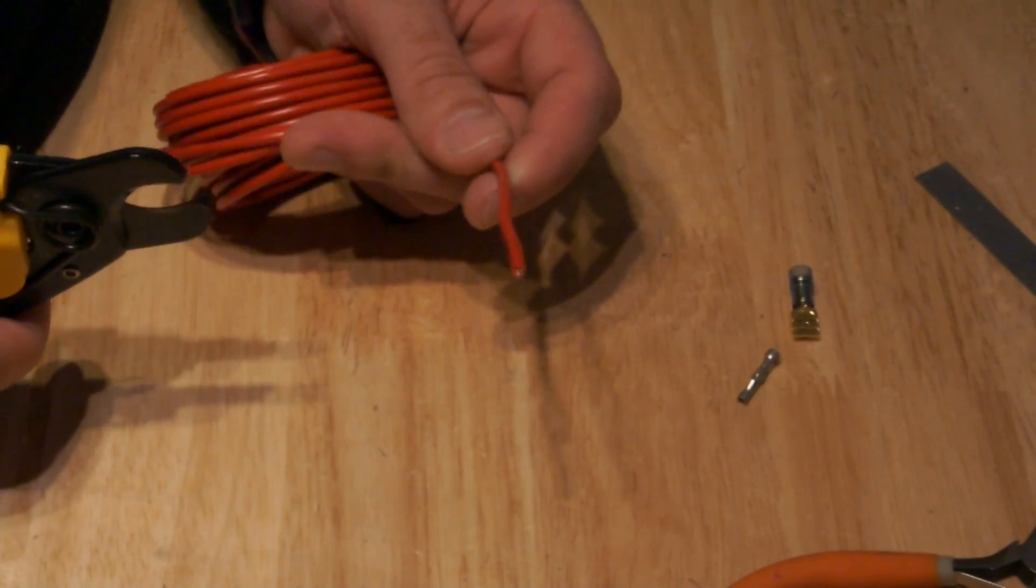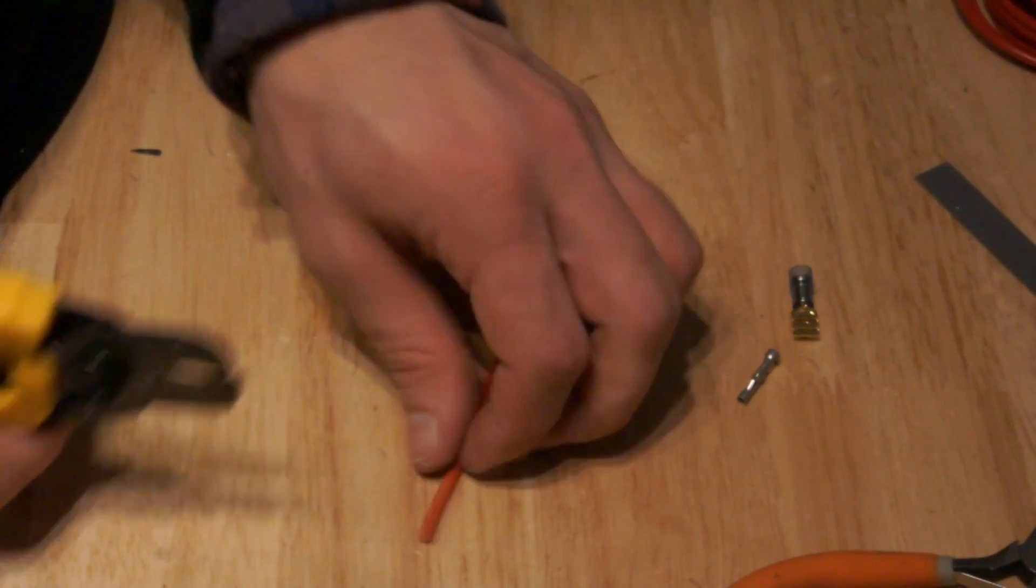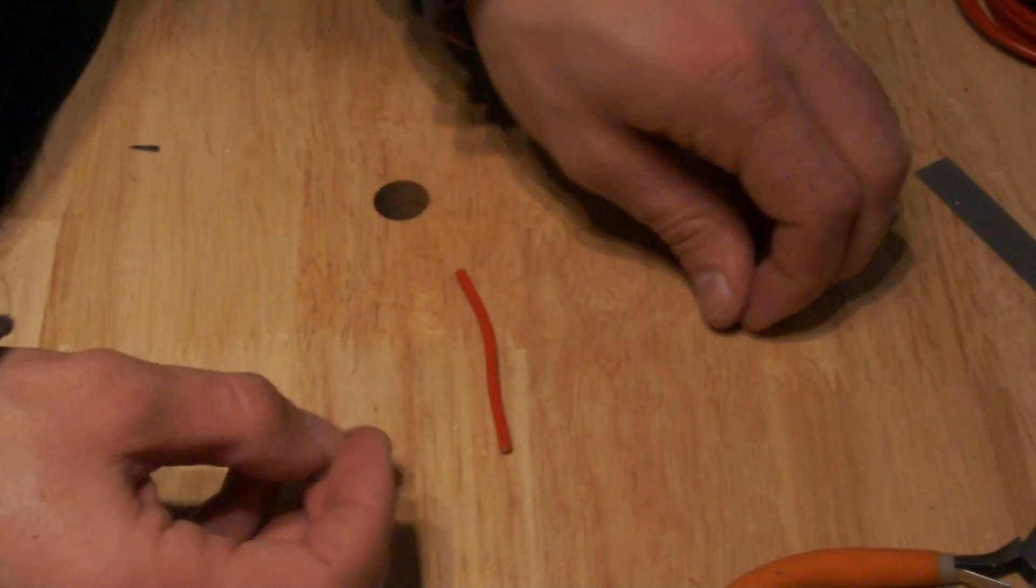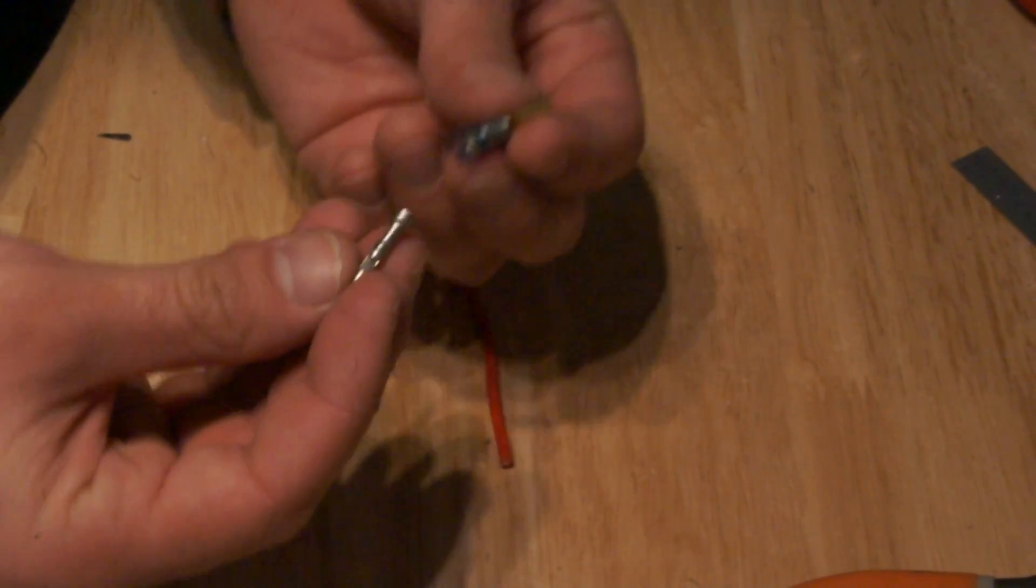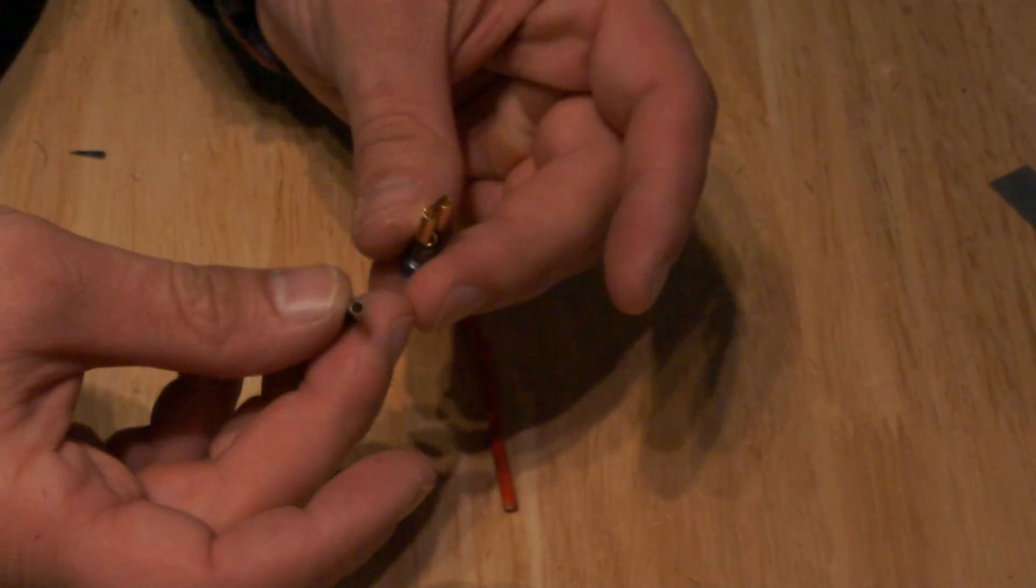Now we're going to cut off a two inch length of the 18 gauge wire. And we're going to attach to it, on one side, a female pin and on the other side, one of our flag connectors.